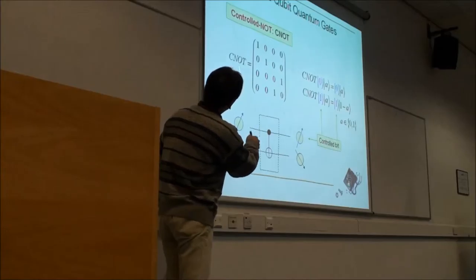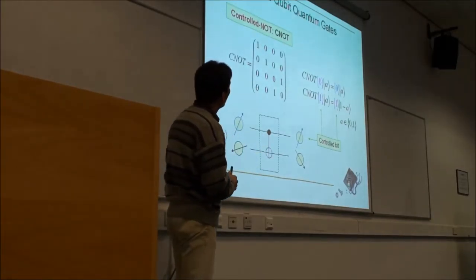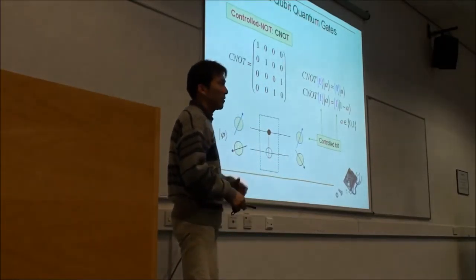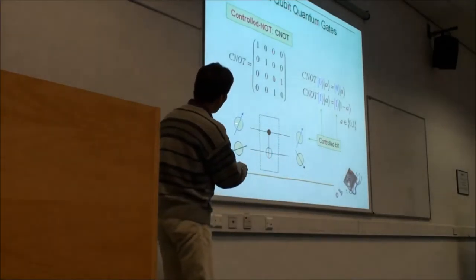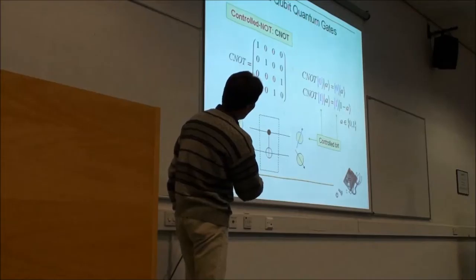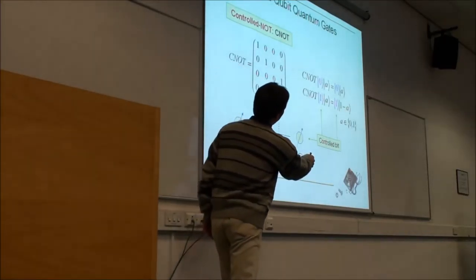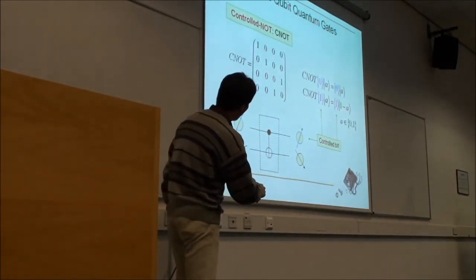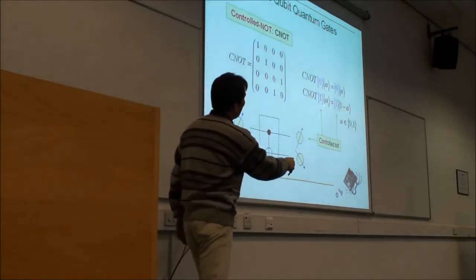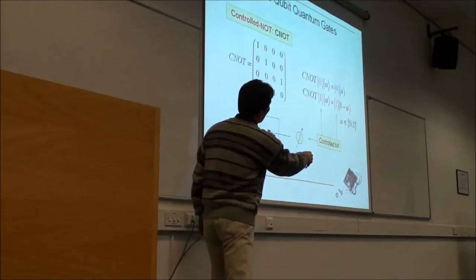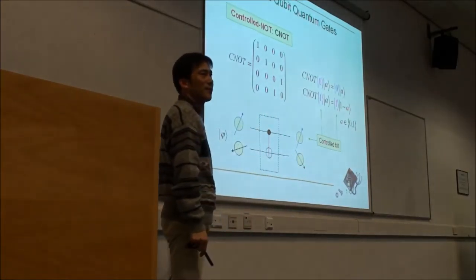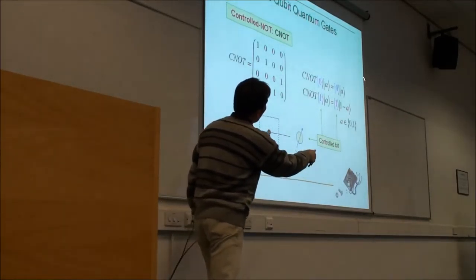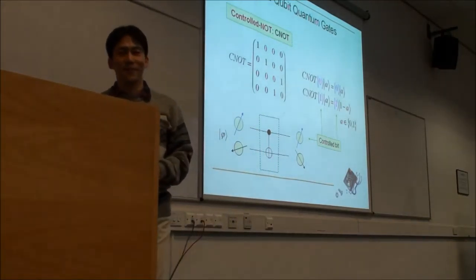For the two-qubit system, there is a very useful gate called CNOT, or controlled-NOT. This works like an if-then-else statement: if the first qubit is 0, then the second qubit is not changed. But if the first qubit becomes 1, then we flip the second qubit. So zero goes to one, and one goes to zero. In general, we have a mixture of zeros and ones, and we get a mixture of those states.